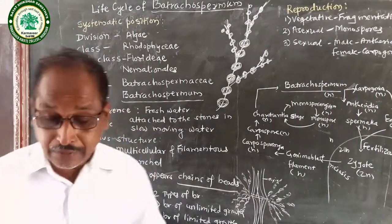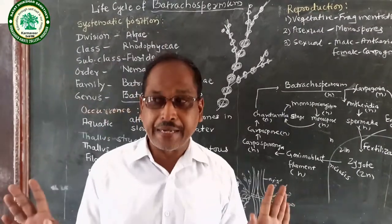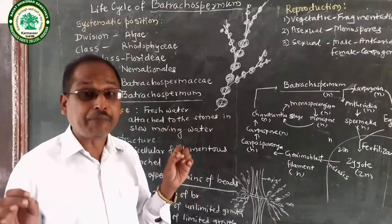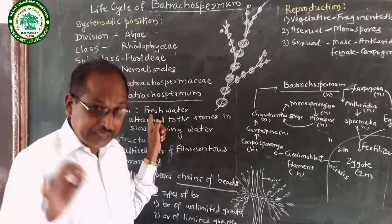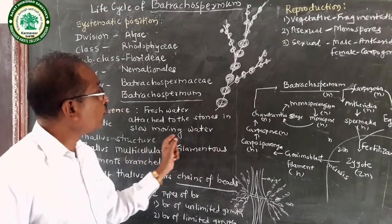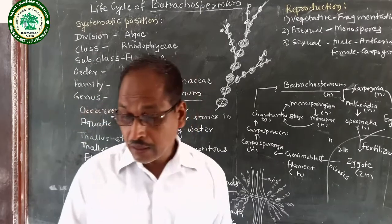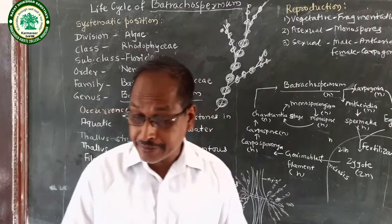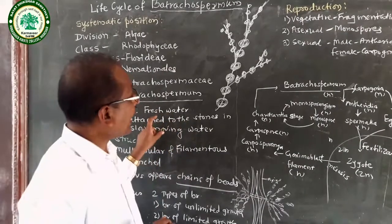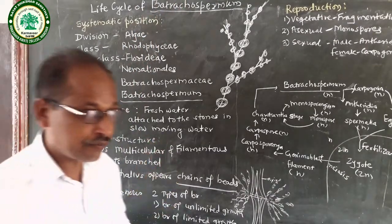The next point is Occurrence. Batrachospermum occurs in aquatic conditions, especially in freshwater. They are attached to stones in shallow, slow-moving water. They are found in springs and rivers. Batrachospermum is also found near the margin of lakes. In short, Batrachospermum is found in aquatic conditions, meaning in water.